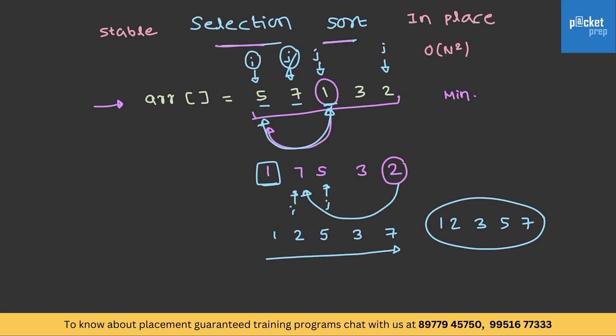The process repeats and the array is completely sorted. If we observe, selection sort falls under the category of in-place sorting — it does not require any extra space. The complexity is O(n²) because for each element, all other elements are traversed once. It is also a stable sorting algorithm.